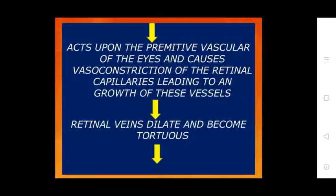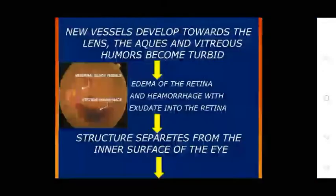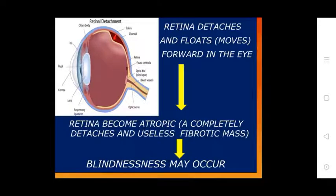Vasoconstriction of the retinal capillaries leads to abnormal growth of these vessels. Retinal veins dilate and become tortuous. New vessels develop towards the lens. The aqueous and vitreous humors become turbid, with edema of the retina and hemorrhage. The retinal structure separates from the inner surface of the eye — retinal detachment occurs. The retina becomes atrophic and forms a fibrotic mass, and blindness may occur.